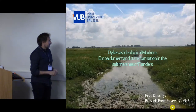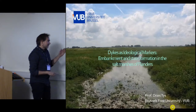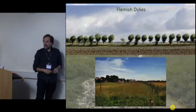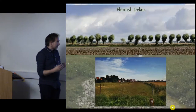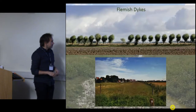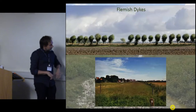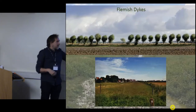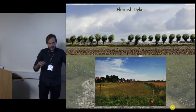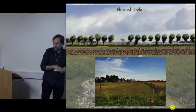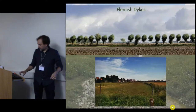We go to a different set of dikes — what we understand as dikes in Flanders. These are embankment dikes in the coastal plains, so they're not that impressive, they're not that high, they don't have clear identities like the ones we've just seen. But they're there and they have maybe some similar aspects in them.